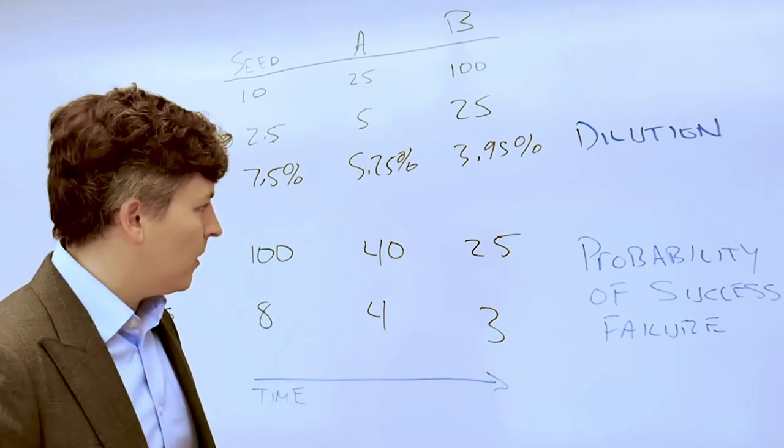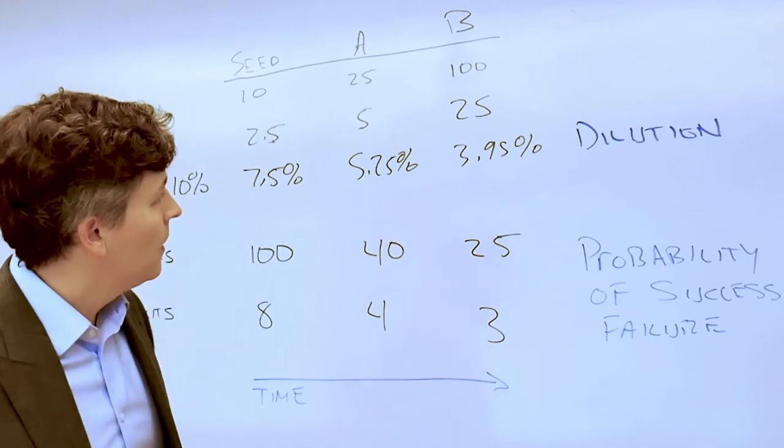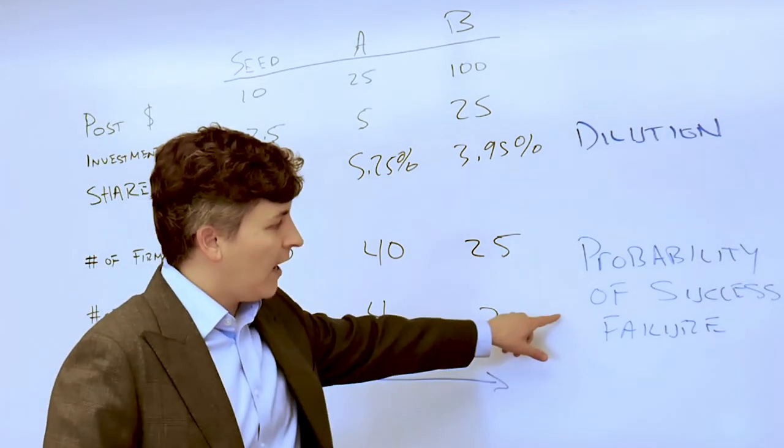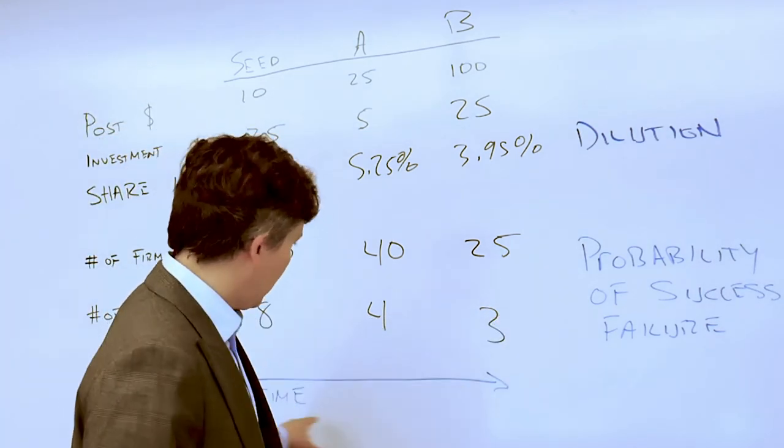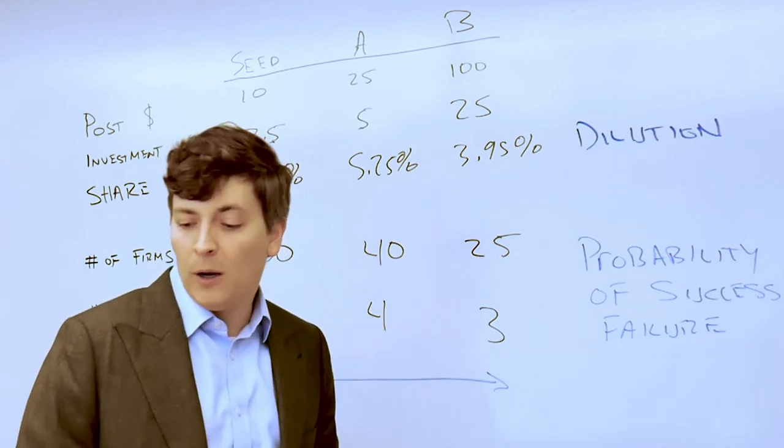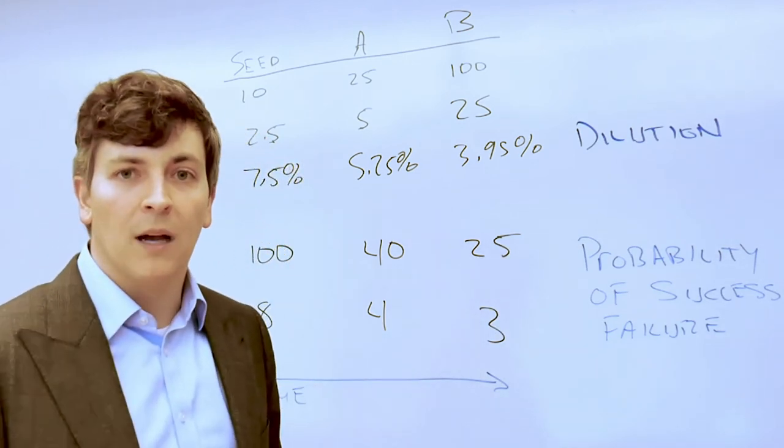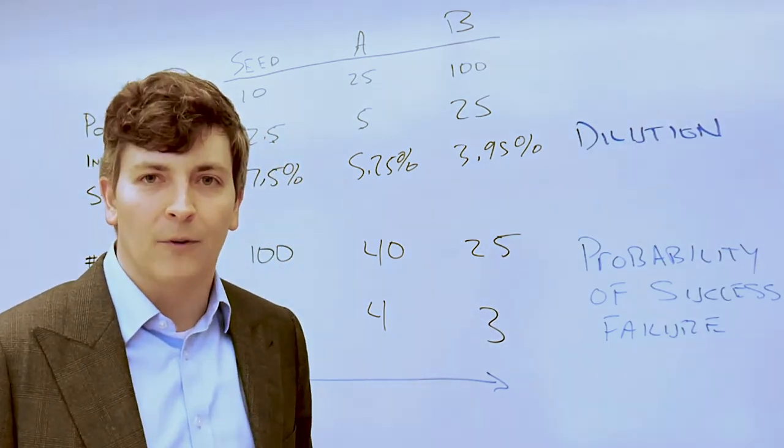So there's a lot of variability, but the three lessons to take away are dilution, factoring in the probability of success, and factoring in the time upon which value might be realized by someone who is joining a firm.